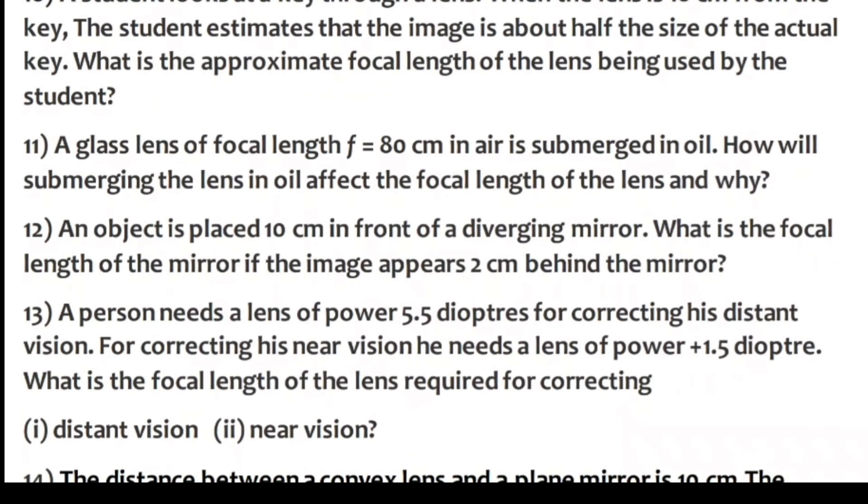Question 13: A person needs a lens of power 5.5 diopters for correcting his distant vision. For correcting his near vision he needs a lens of power 1.5 diopters. What is the focal length of the lens required for correcting distant vision and near vision?